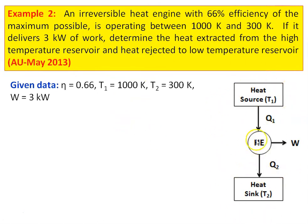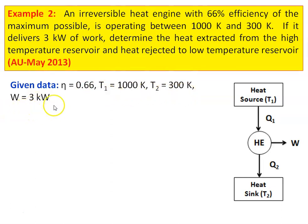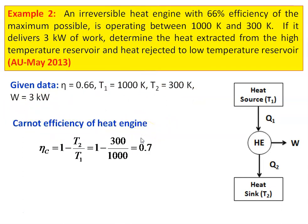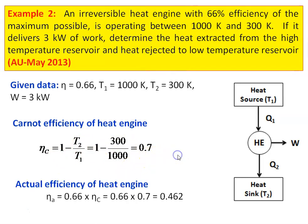This is the heat engine diagram: the heat engine takes heat energy from the high temperature reservoir and rejects heat to the low temperature reservoir. Q1 is the heat energy given to the heat engine and Q2 is the heat energy rejected. Data given: actual efficiency is 66 percent of maximum, T1 equal to 1000 Kelvin, T2 equal to 300 Kelvin, and work equal to 3 kilowatts. The Carnot efficiency is eta_c equal to 1 minus T2 by T1, which is 1 minus 300 divided by 1000 equal to 0.7. The actual efficiency is 0.66 times the maximum possible efficiency, so 0.66 into 0.7 equal to 0.462.